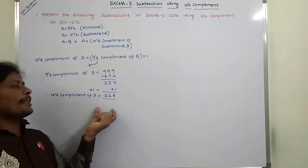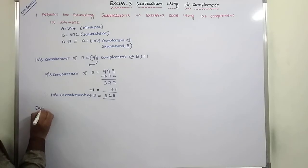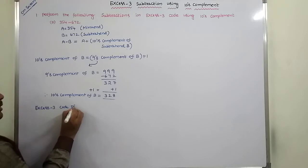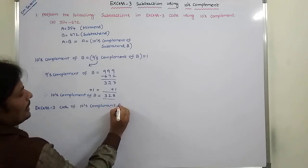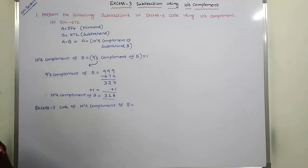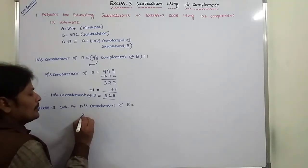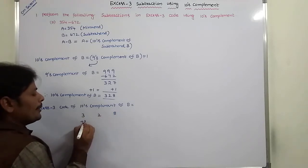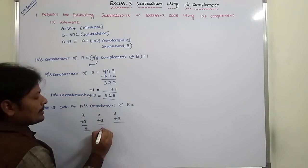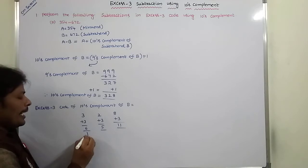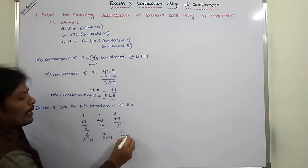Now we find the XS3 code of the ten's complement of B, which is 328. For each digit we add plus 3: 3 plus 3 is 6, 2 plus 3 is 5, 8 plus 3 is 11. The binary equivalents are: 6 → 0110, 5 → 0101, 11 → 1011.